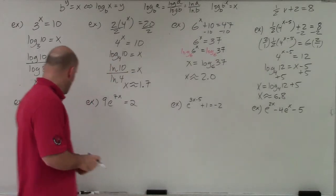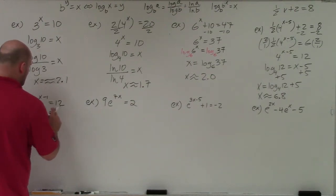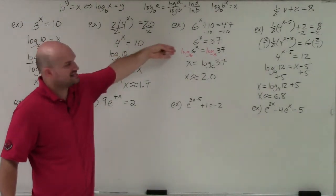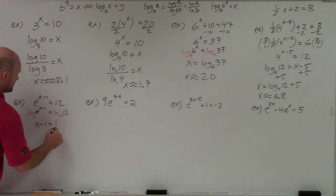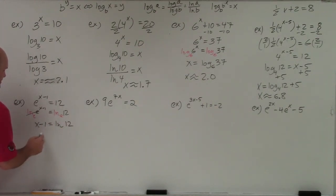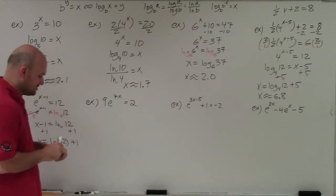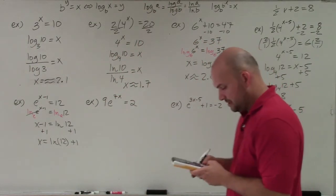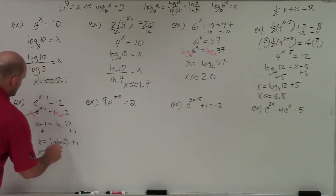For base e problems, you can take the natural log of both sides, since the natural log is base e. So for e to the (x minus 1) equals 12, taking ln of both sides gives x minus 1 equals ln of 12. This is why it's helpful to use this property — when you have base e, the easiest thing is to take ln of both sides. Then adding 1 gives x equals ln of 12 plus 1. Computing ln of 12 plus 1 gives x approximately equal to 3.5.